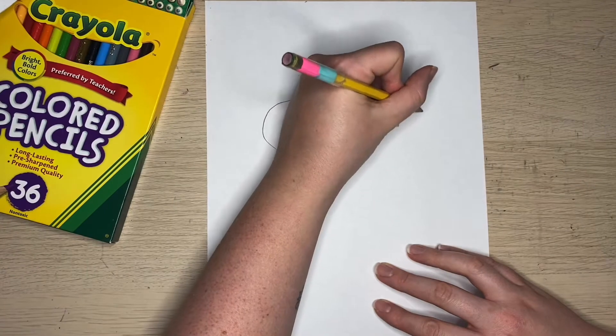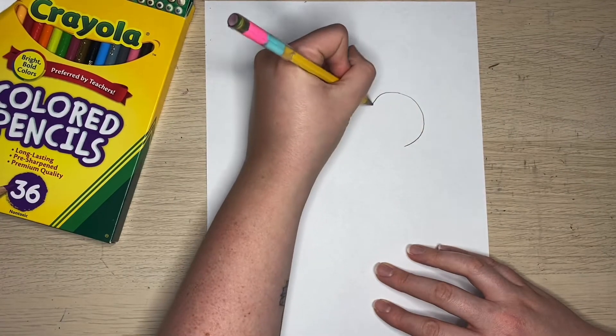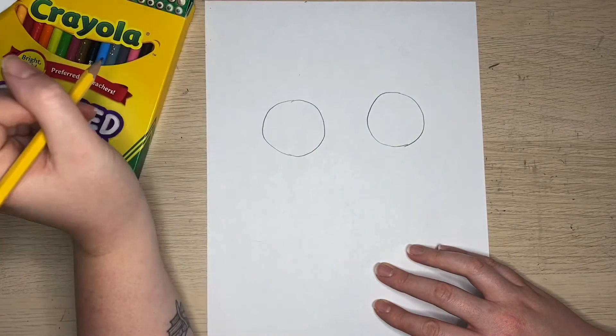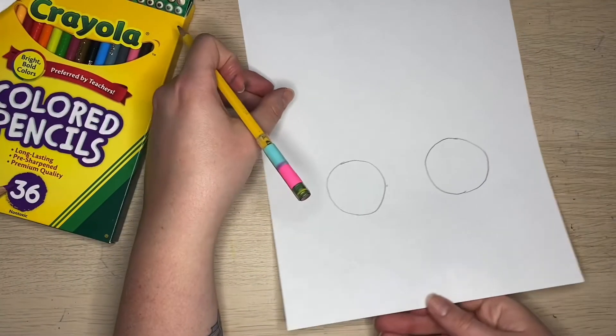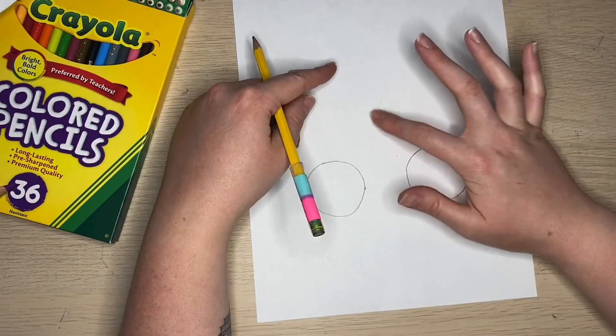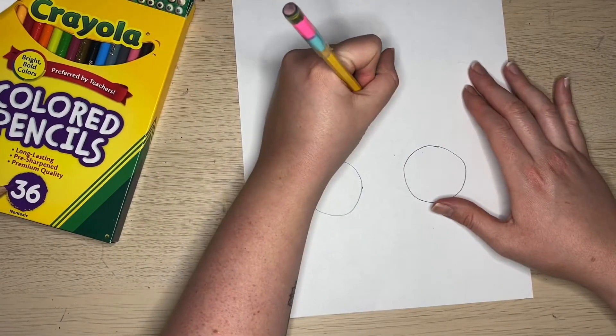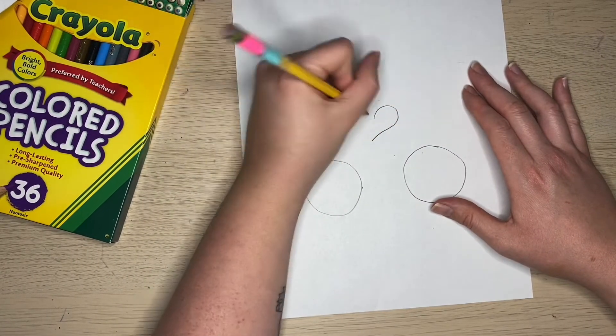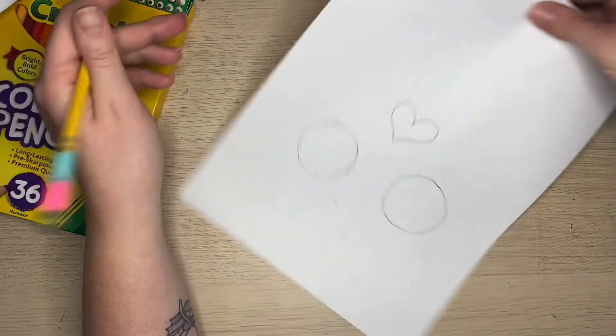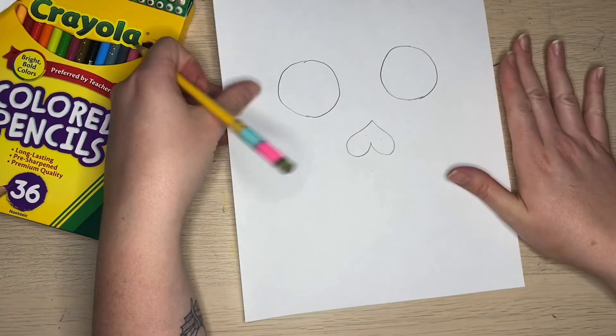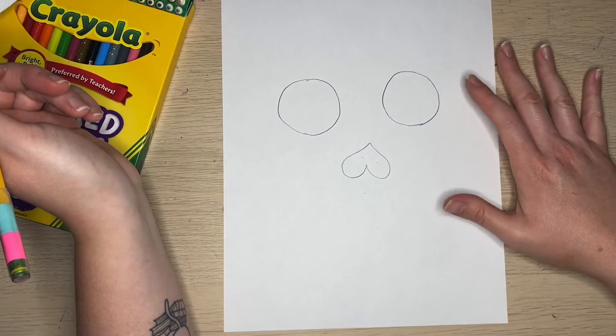Then I'll flip my paper upside down, and near right here I'll draw a heart. We'll flip our paper over and we just made our skull's nose.